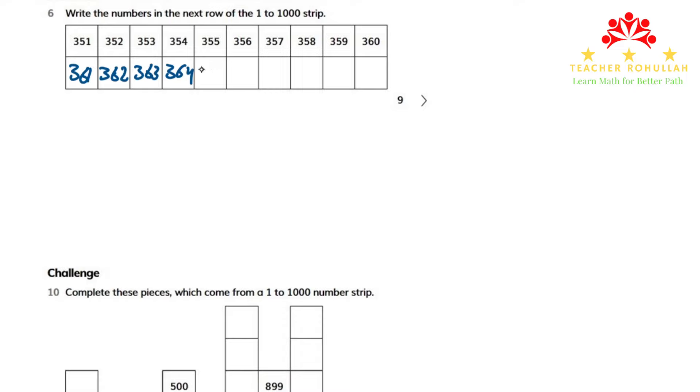365, 366, 367, 368, 369, and 370. Because we consider 1 to 10, 11 to 20, 21 to 30, and so on. We are done with question 6.